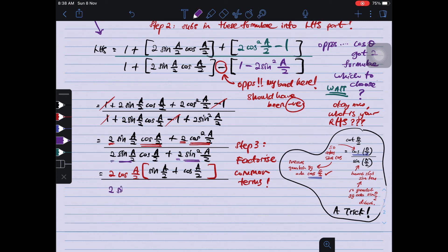So denominator also, bring out 2 sine A over 2. The rest of it inside the bracket is cos A over 2, cos A over 2, plus, plus, plus, sine A over 2. Therefore, ooh, do you... what? They are the same.